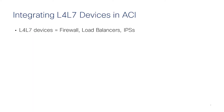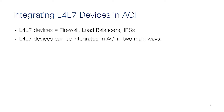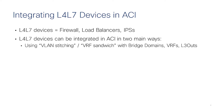Layer 4 to layer 7 devices is the term we use to refer to firewalls, load balancers, and intrusion prevention systems. You can integrate them with ACI in two main ways. One is the classic networking connectivity, which means using VLANs — and in ACI that means using bridge domains or VRFs to create the forwarding path. That's the classic way of connecting layer 4 to layer 7 devices.